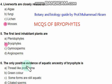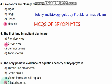The positive evidence of aquatic ancestry of bryophytes is the presence of ciliated sperm. From the given options, the right option is ciliated sperm. Ciliated sperm tells us that bryophytes' ancestors are aquatic.